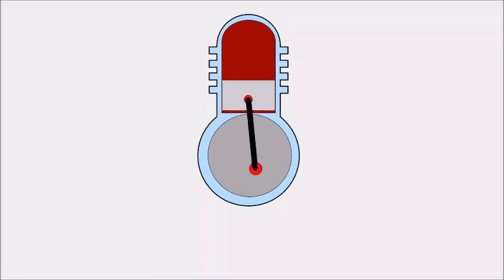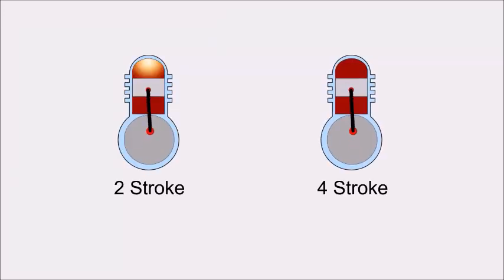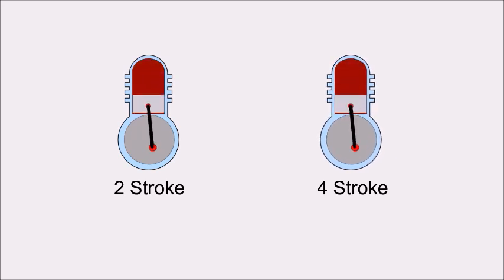A two-stroke engine has a power stroke every revolution. A four-stroke engine has a power stroke every second revolution. The difference should be clear in this animation. A two-stroke engine fires every downstroke. A four-stroke engine fires every second downstroke.